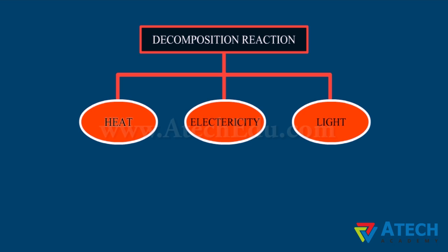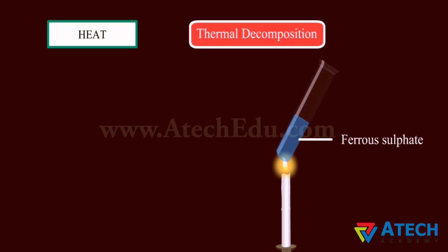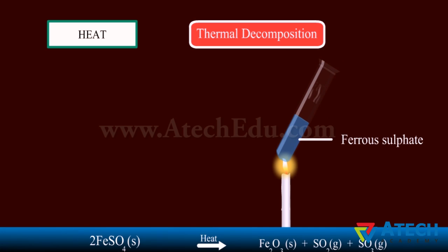Decomposition of a substance due to the application of heat is called thermal decomposition. Ferrous sulfate crystals lose water when heated and the color of the crystal changes; it then decomposes to ferric oxide, sulfur dioxide, and sulfur trioxide. Decomposition of calcium carbonate to calcium oxide and carbon dioxide on heating is another important thermal decomposition reaction.